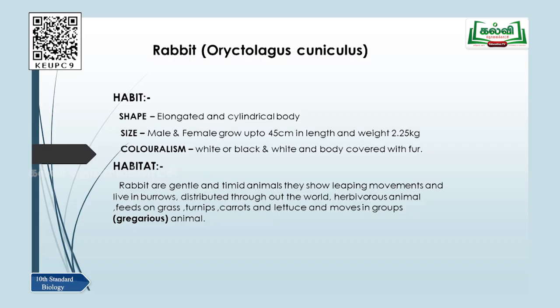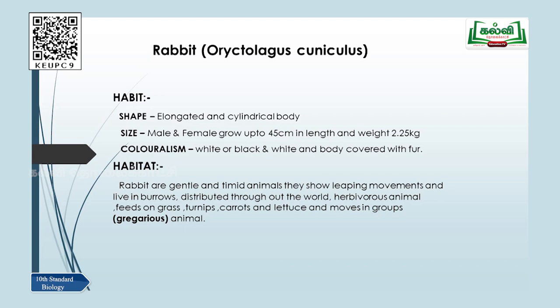Habitat means the place or home where the rabbit lives. Rabbits are gentle and timid animals — gentle means they are very shy, timid means they are very sensitive. They get scared very fast; a small sound and they start running. They show leaping movements — they jump to move around — and they live in burrows, which are holes made by the rabbit in loose soil. Rabbits are distributed throughout the world, are herbivores eating grass, turnips, carrots and lettuce, and they move in groups, so they are called gregarious animals.